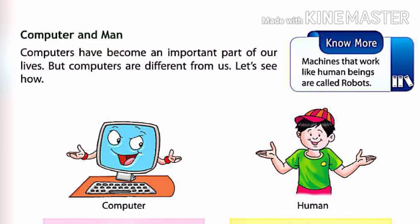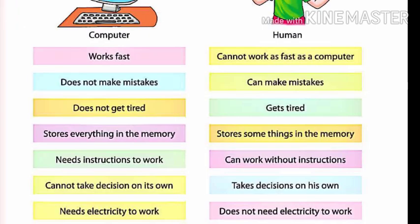Computers have become an important part of our life, but they are different from human beings. A computer works very fast, it does not make mistakes, it does not get tired, and it stores everything in its memory. A computer needs instructions to work and cannot take any decision on its own. Most importantly, a computer needs electricity.